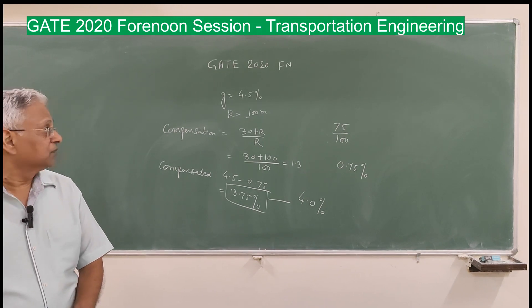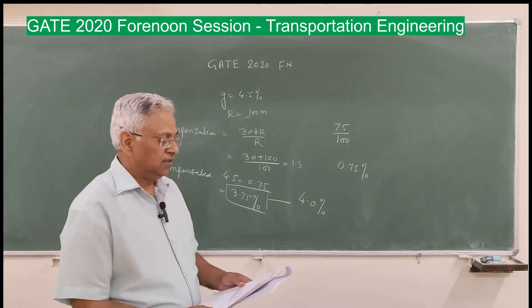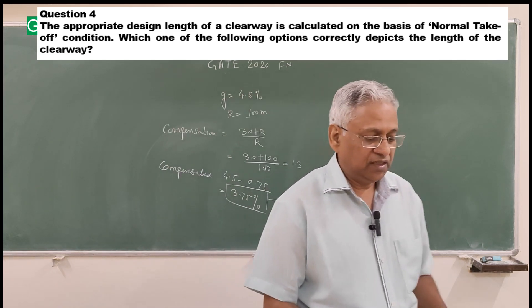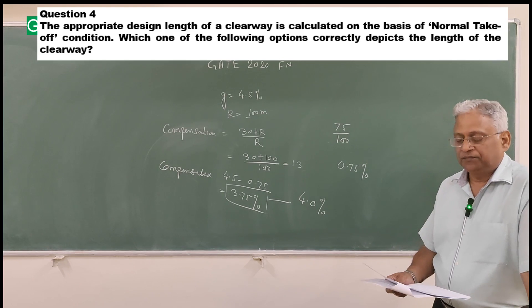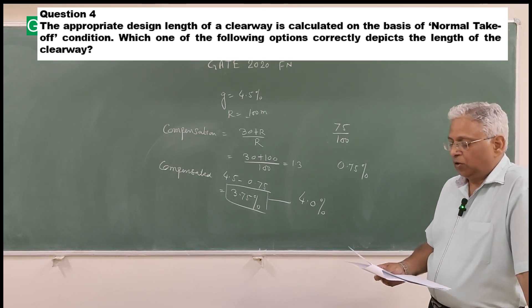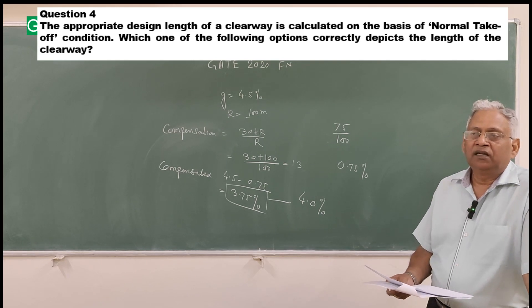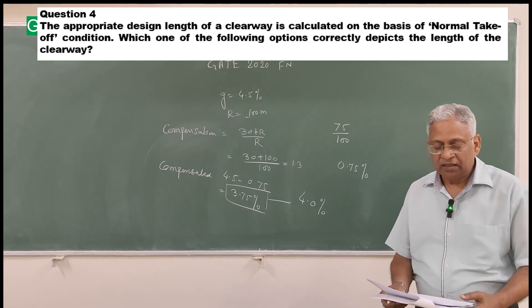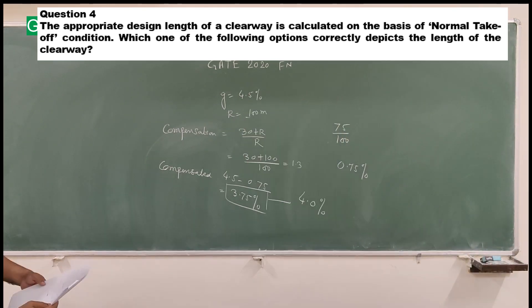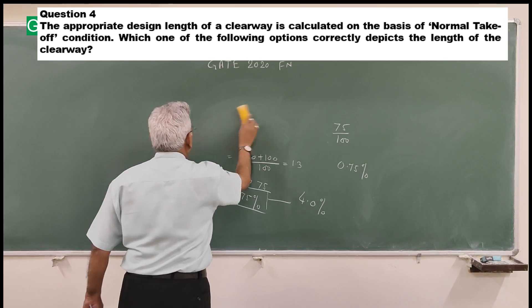Next question, question number 4: The appropriate design length of a clear way is calculated on the basis of normal takeoff condition. Which of the following options correctly depicts the length of the clear way? Here 4 options are given, 4 diagrams are given. Let me explain how we determine the runway length for a normal takeoff case.